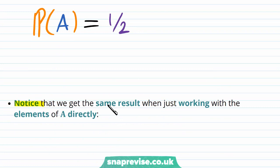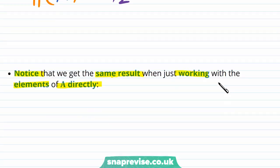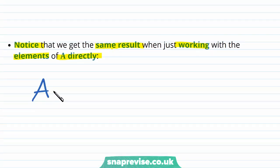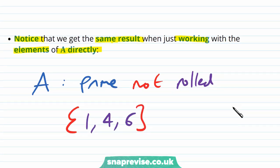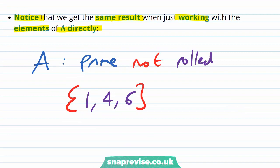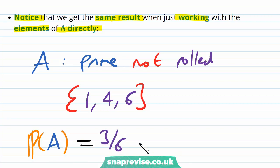Notice that we can get the same result when working with the elements of A directly. Recall that A is defined as a prime not being rolled, so we are looking at the set {1, 4, 6} — the non-primes. Using equally likely outcomes, the probability of A is three over six, which is again one-half. So we get the same answer either way.